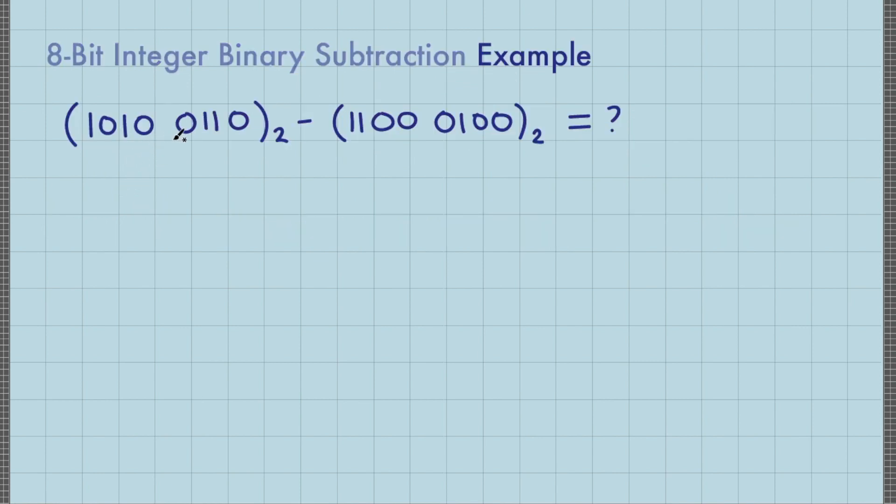For example, binary number 10100110 minus binary number 11000100 equals... First, let me rewrite it in a more familiar way. This is the minuend, 10100110, and the subtrahend, 11000100.